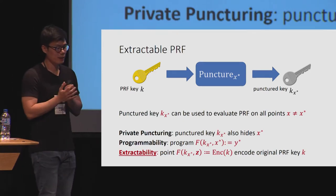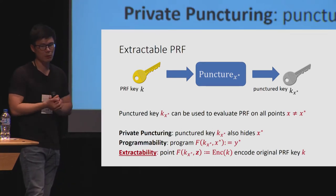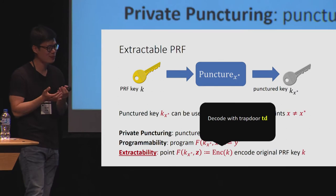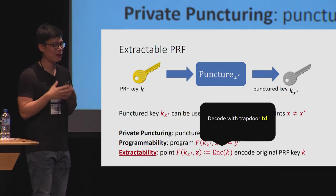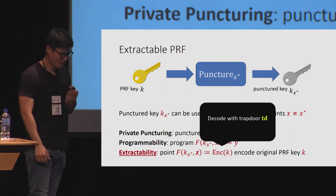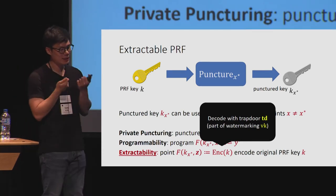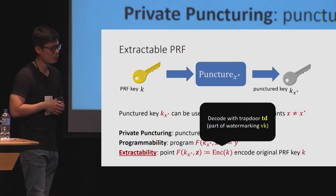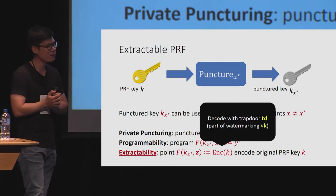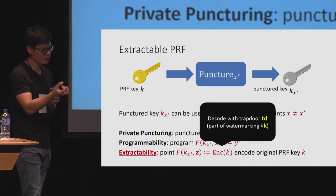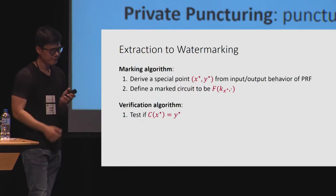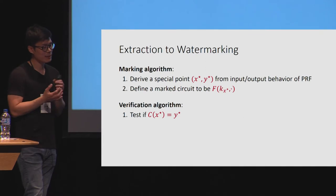This encoding of the PRF key K is still random to anyone in the system who does not have access to trapdoor information for the PRF. But with access to a trapdoor associated with the PRF, you can completely recover the original PRF key associated with the extractable PRF. Our plan is to move this special point Z and the trapdoor information into a watermarking verification key, such that the verification algorithm can extract the original PRF key and run a statistical test on the adversary's verification queries.